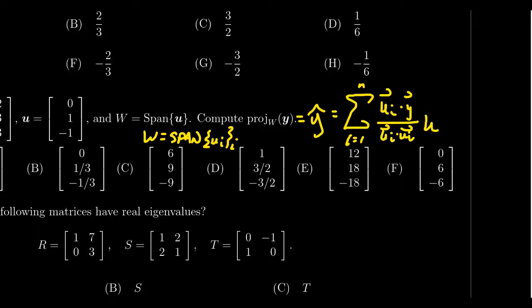And then you also scale that by ui. So you take the sum of those things. This will give us the orthogonal projection if we have an orthogonal basis, which you will have in this example.